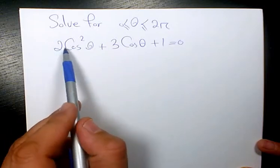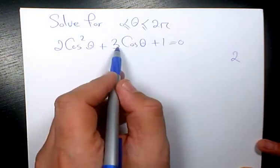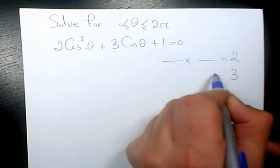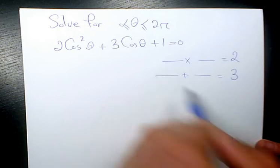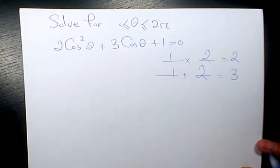AC method is saying that A times C, 2 times 1 is 2. And here we have 3. We are looking for 2 numbers multiplied to 2 and add to 3. Which means that these 2 numbers are positive 2 and positive 1.